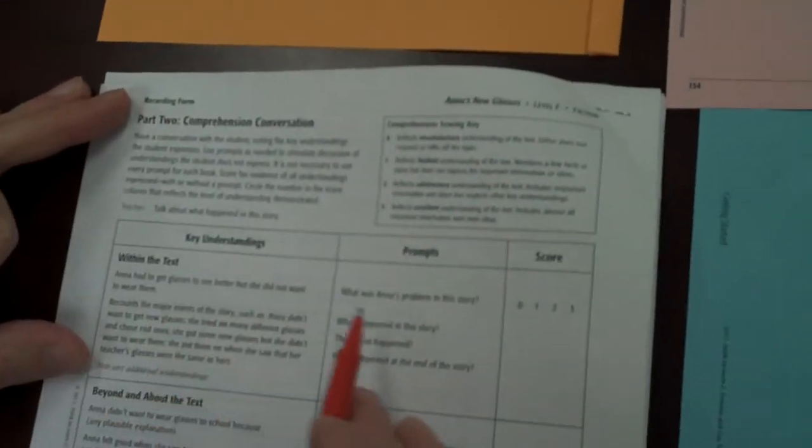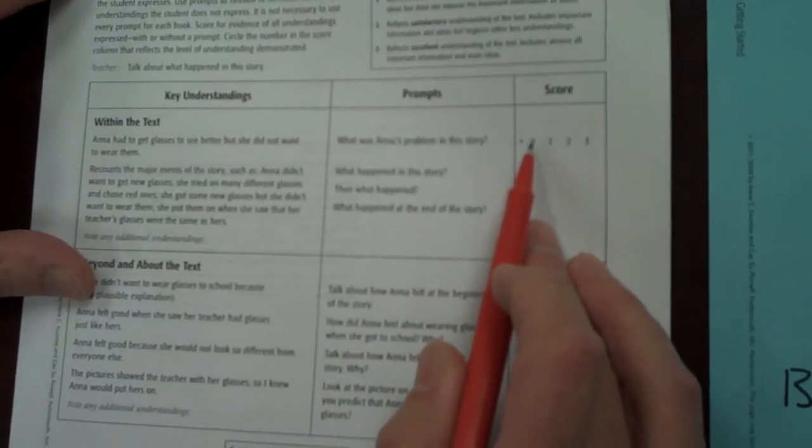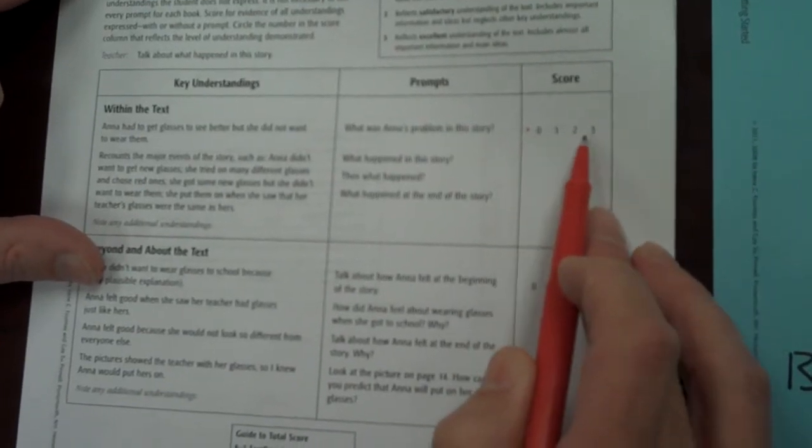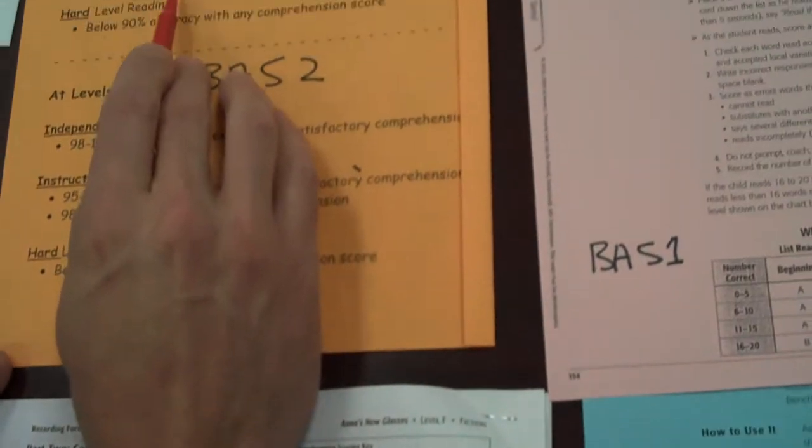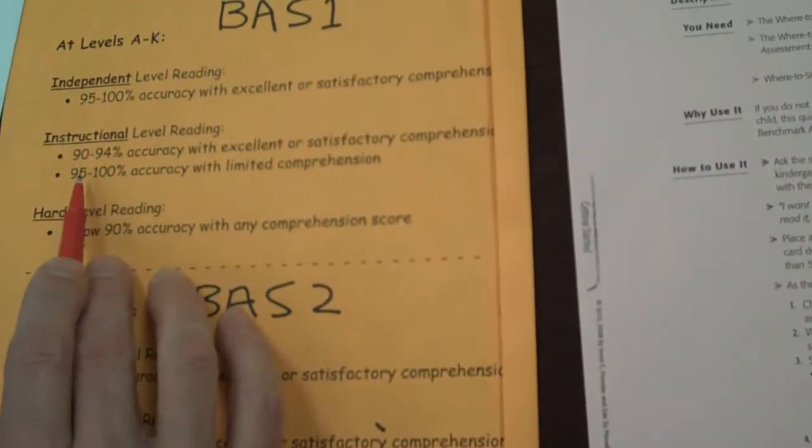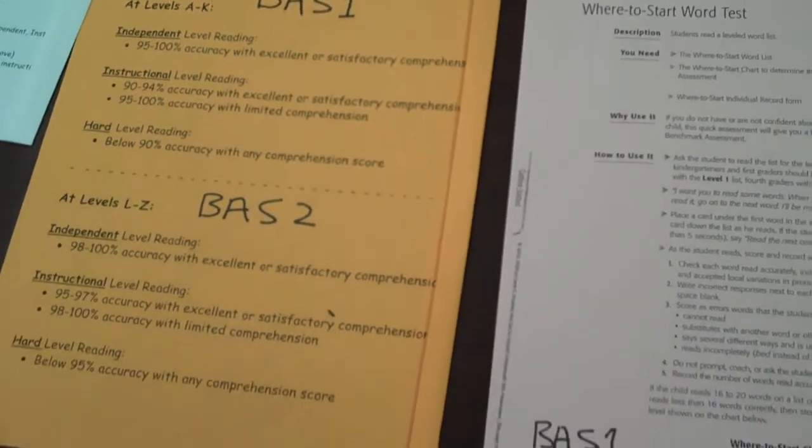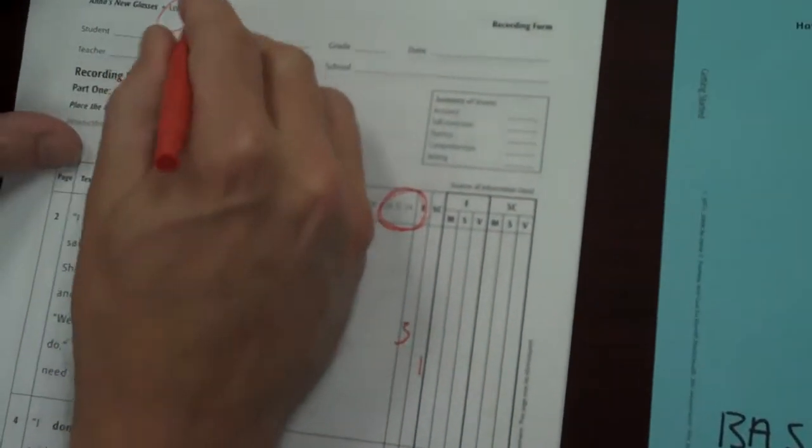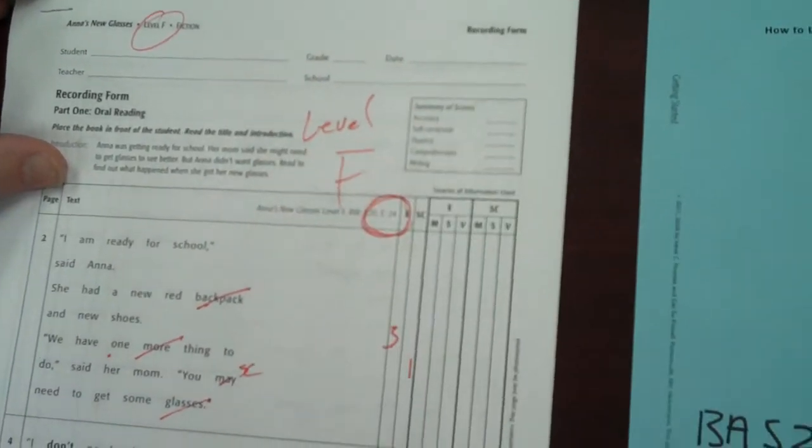On the back, you have some prompts about what happened in the story, your comprehension of the story. And you, as a teacher, will make that determination of where that level is. So if you feel the accuracy and has good comprehension, you want to pick this as an instructional level. For my recommendation for how I did this, this student would be a level F. And I would mark it level F on the front there.